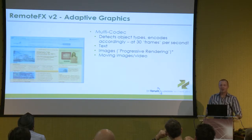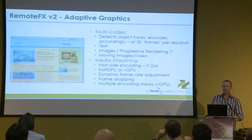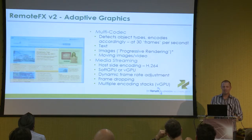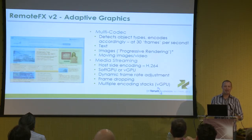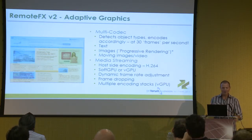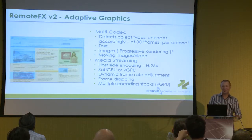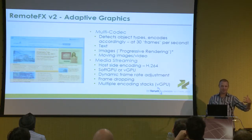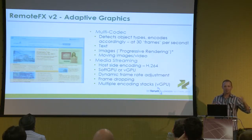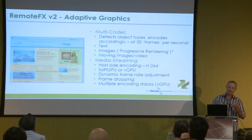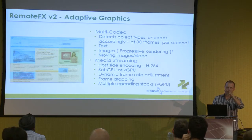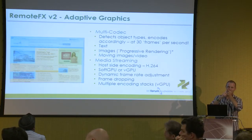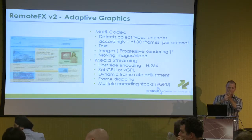Regular images use progressive rendering - Citrix has had this with HDX/ICA for a while, they call it Speed Screen Progressive Display, it's pretty close to the same thing. But things get more interesting with a feature set they're calling media streaming. They can actually pick these changes up at 30 frames per second, which is pretty impressive. They take those different changing spaces and put them through a compression engine, render them, and send them down to the client. When they pick up video content, the encoding mechanism is based on H.264.